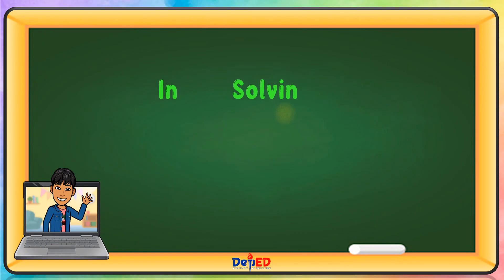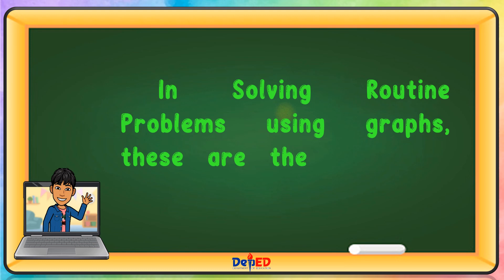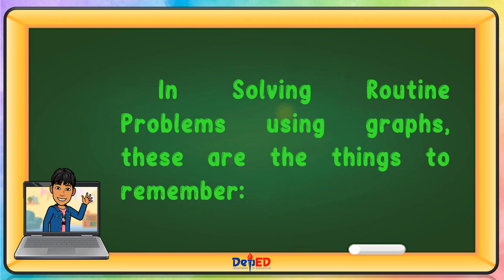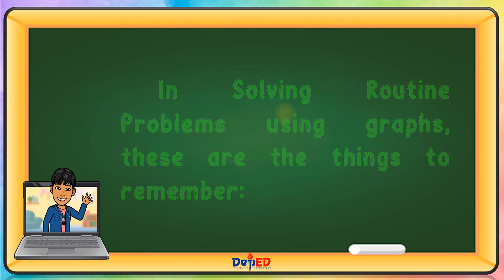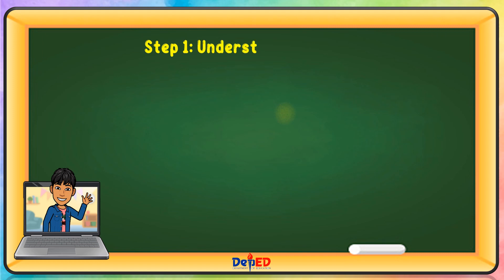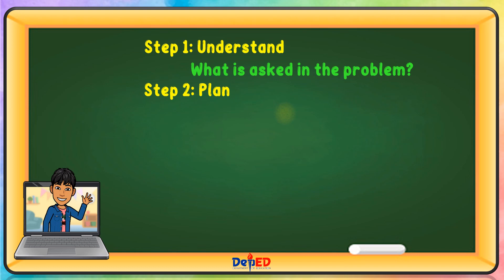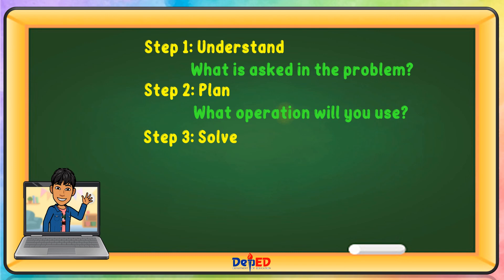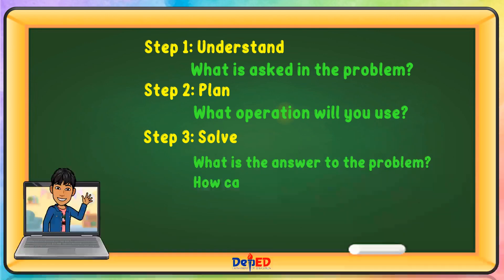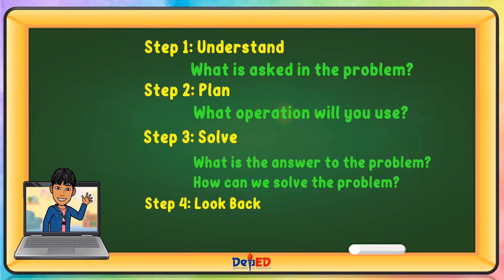In solving routine problems using graphs, these are the things to remember. Step 1 — Understand: What is asked in the problem? Step 2 — Plan: What operation will you use? Step 3 — Solve: What is the answer to the problem and how can we solve it? Step 4 — Look Back: How can we check that our answer is correct?